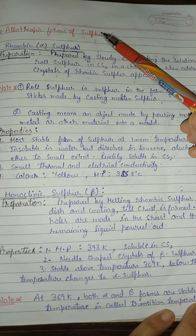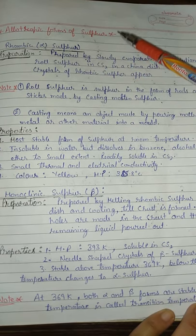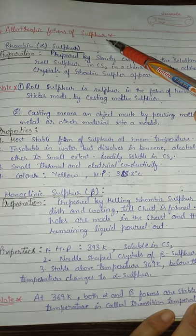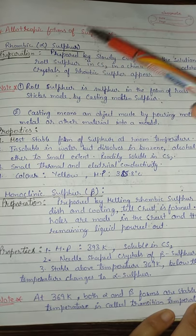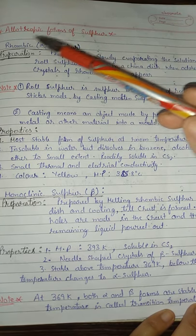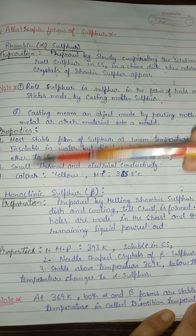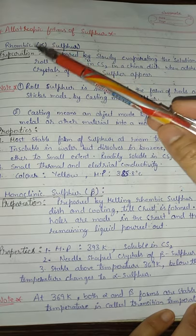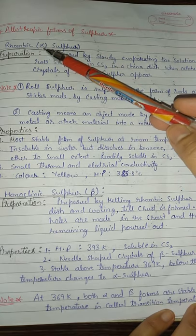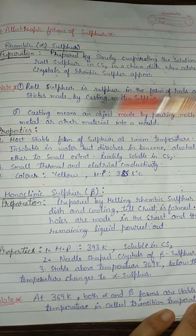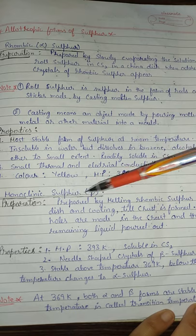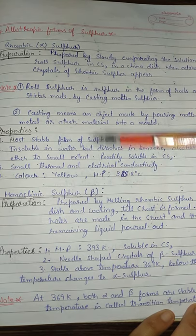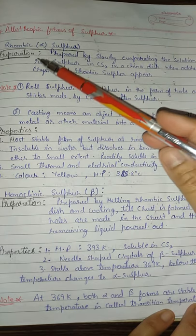P-block chapter, group number 16: allotropic forms of sulfur. There are two allotropic forms of sulfur — rhombic and monoclinic. Rhombic is also called alpha sulfur, and monoclinic is also called beta sulfur.